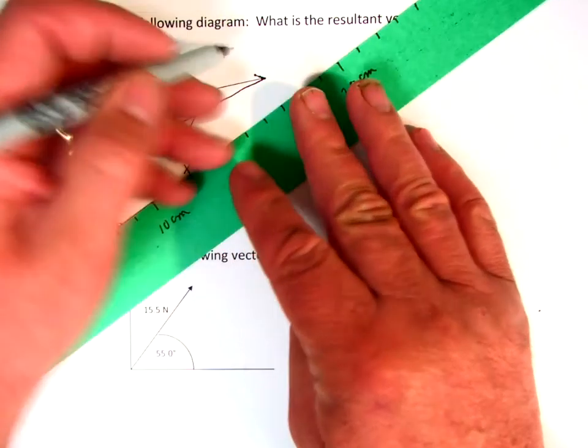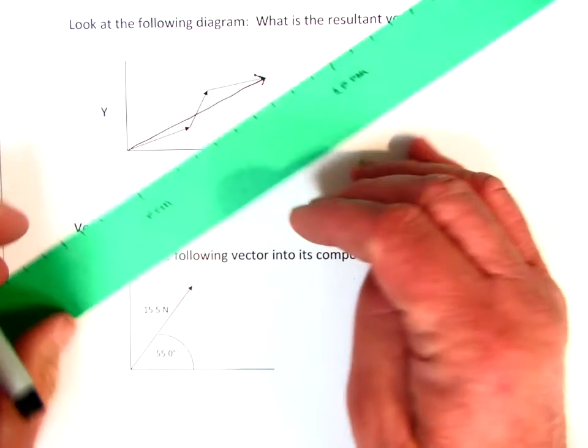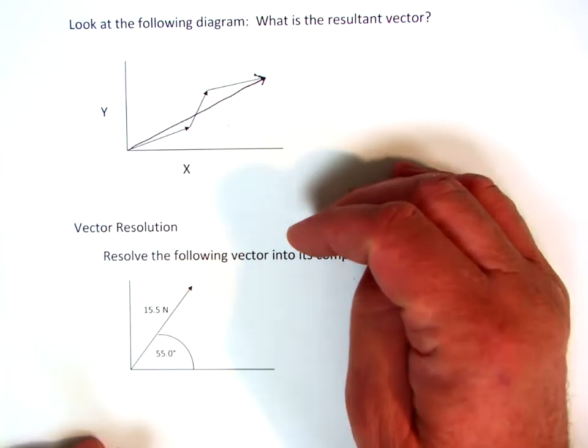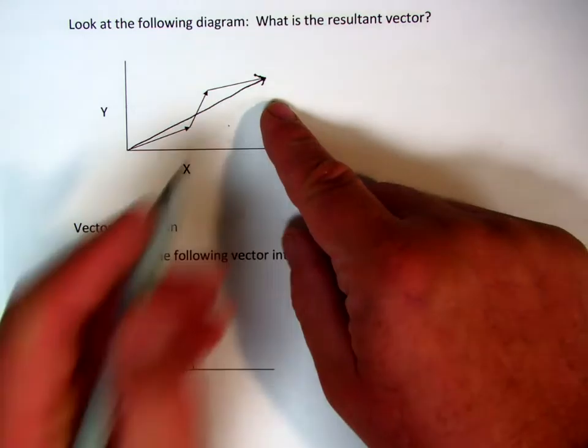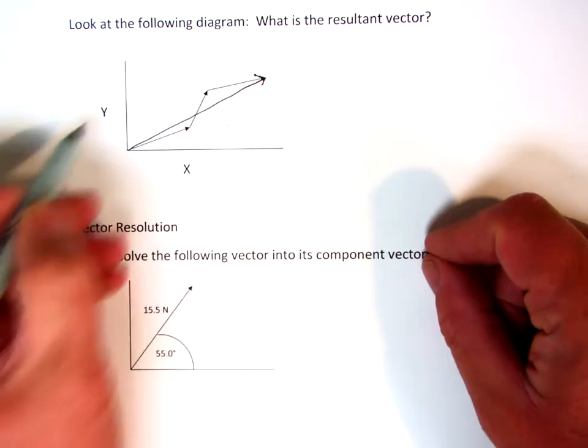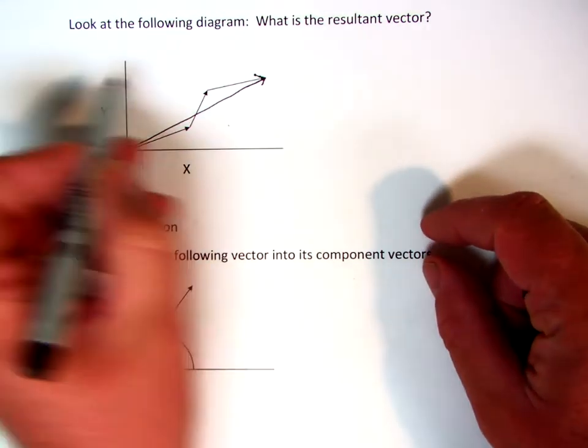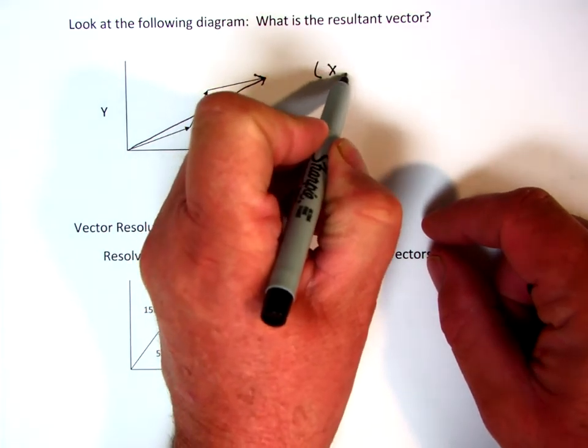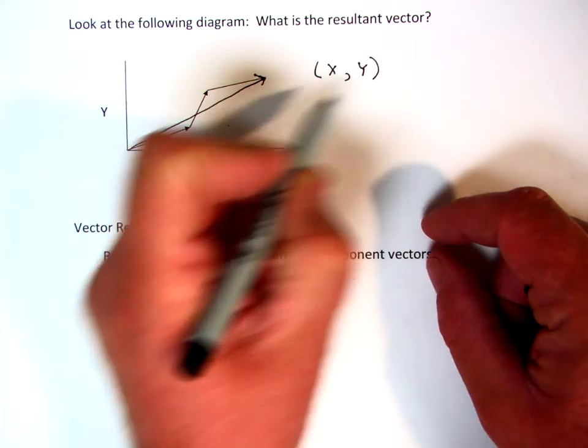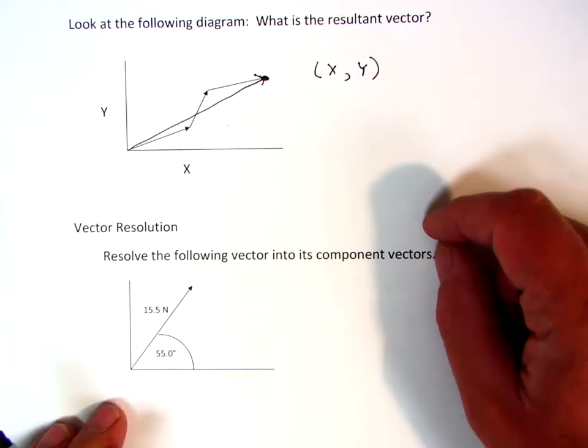Now let's evaluate how we could actually calculate the position of this vector. If I were on an x and y coordinate system, it has some value x comma y. That point does. We're going to visit that a lot here in a little bit.